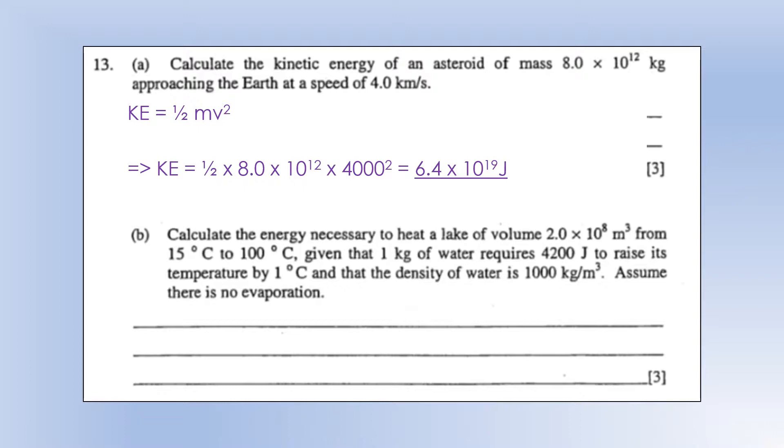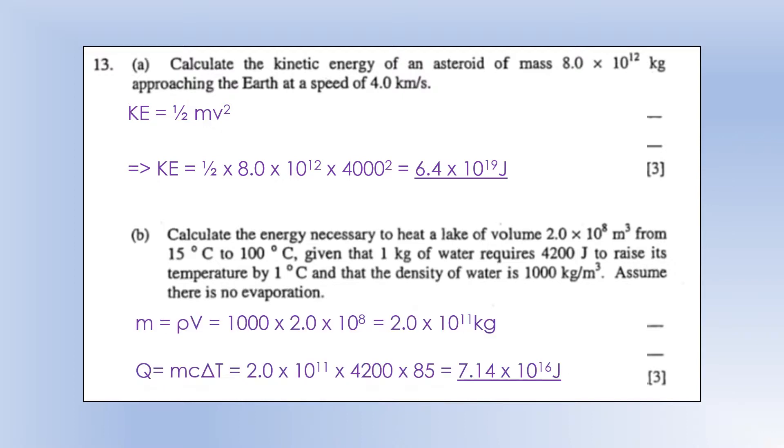Calculate the energy necessary to heat a lake of volume 2 times 10 to the 8 from 15 degrees centigrade to 100 degrees centigrade, given that 1 kg of water requires 4,000 joules to raise the temperature by 1 degree, and the density is 1,000. First thing I'm going to do is calculate the mass using the volume and the density, and then once we've got the mass, we can use the specific heat capacity and the temperature change to calculate the thermal energy you need to supply.